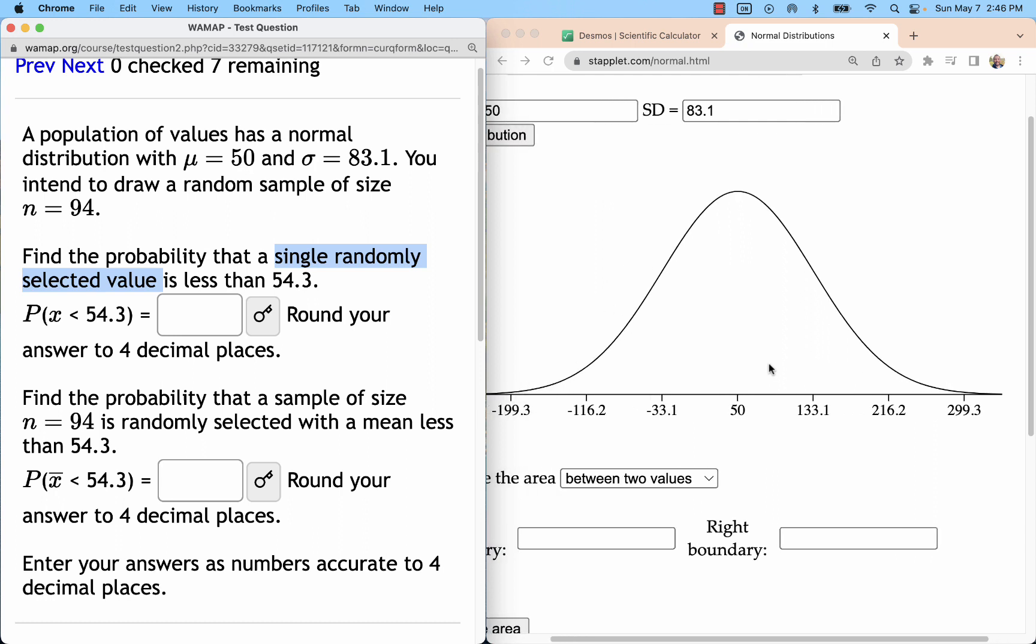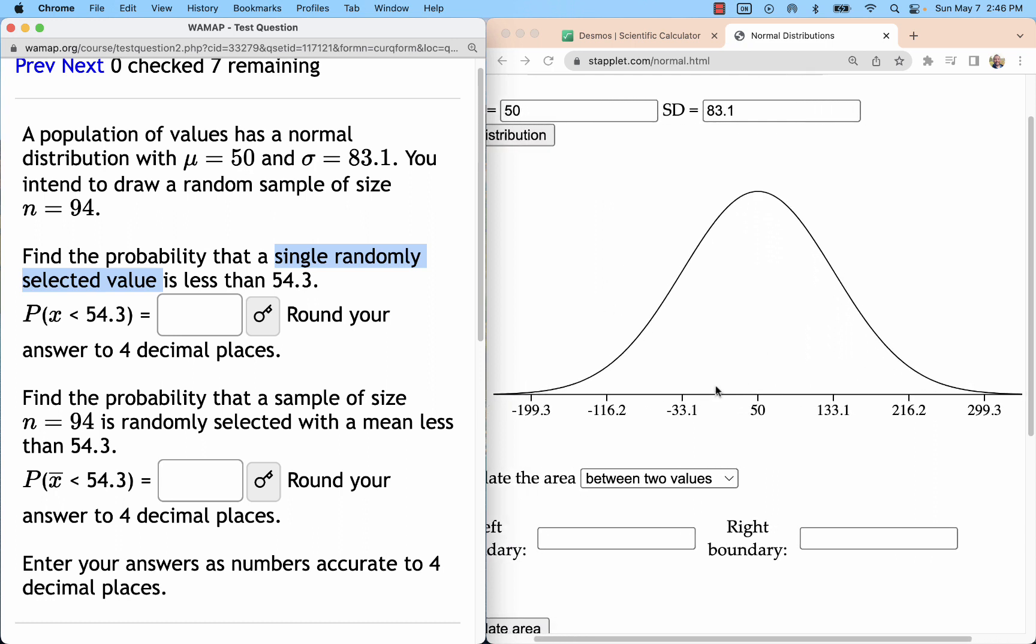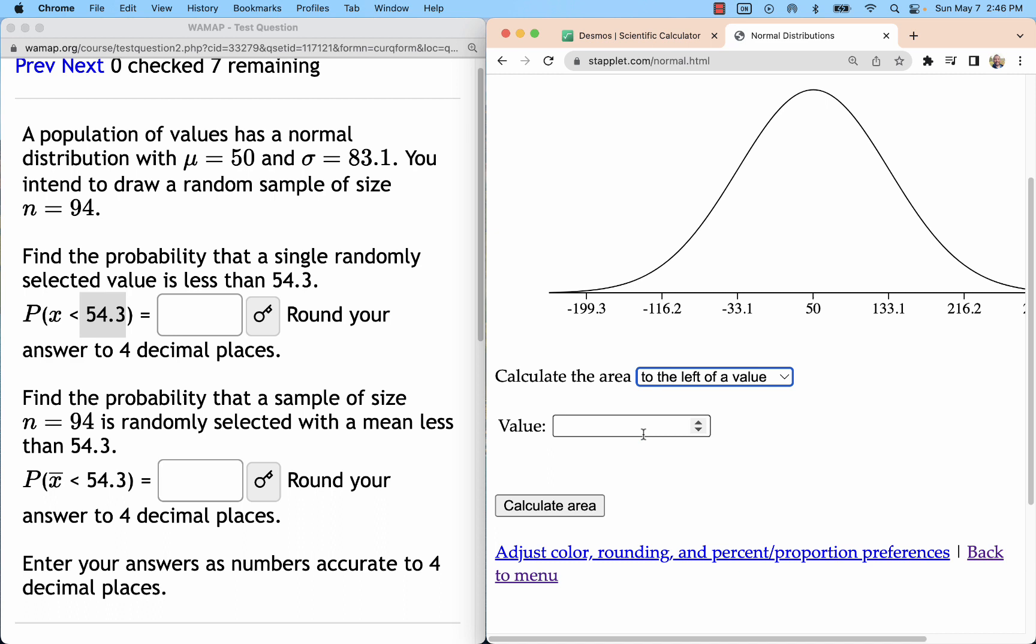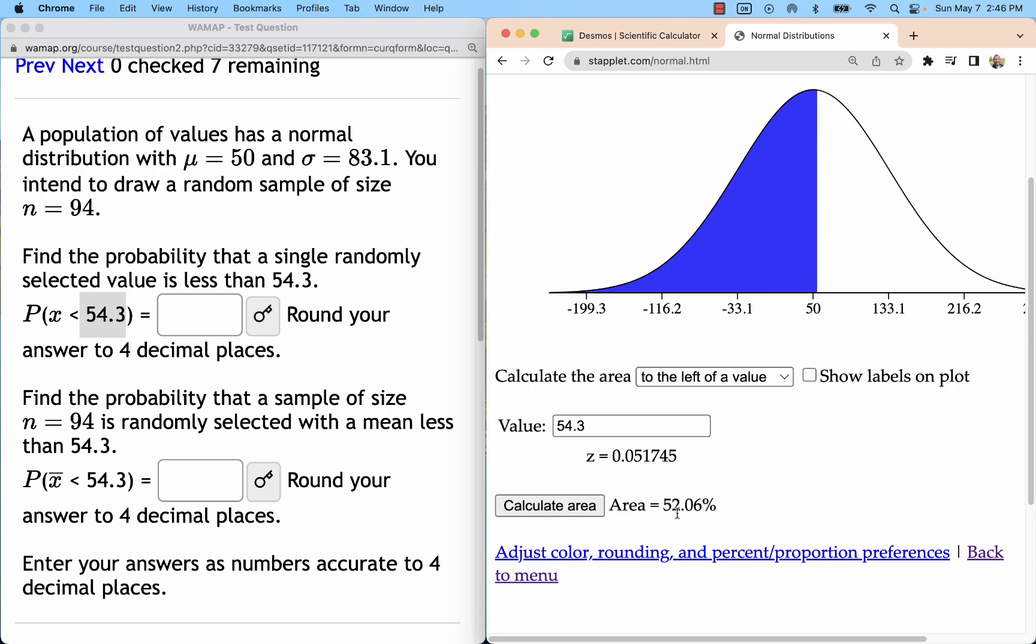It's hard to say what this variable will be, but we could say the probability of picking one of these values and getting less than 54.3, using the calculated area to the left of 54.3. So that gives me an area of 52.06% of the curve, probability 52.06. As a decimal, that's 0.5206.